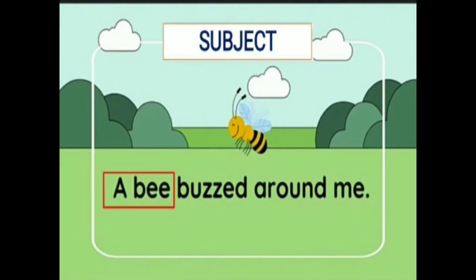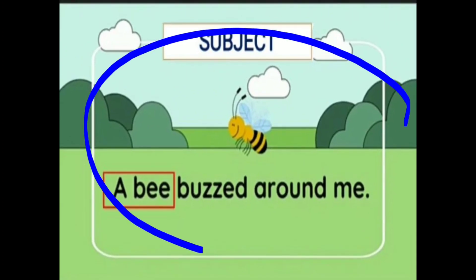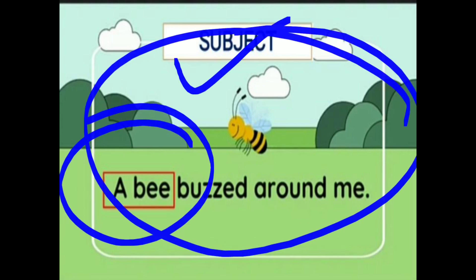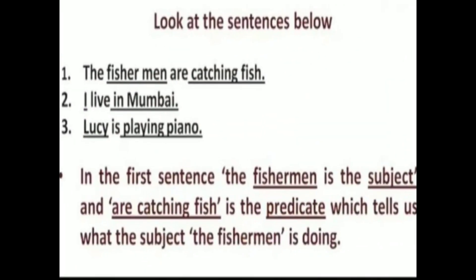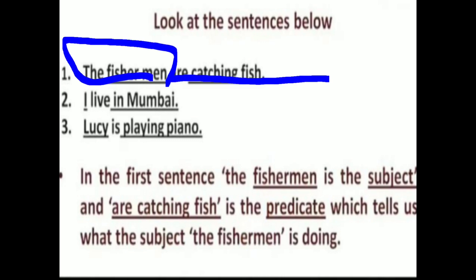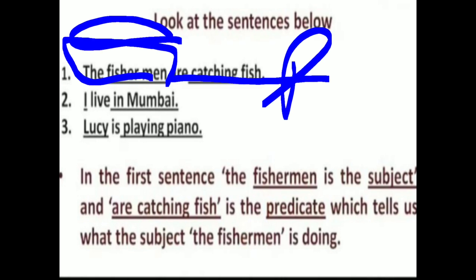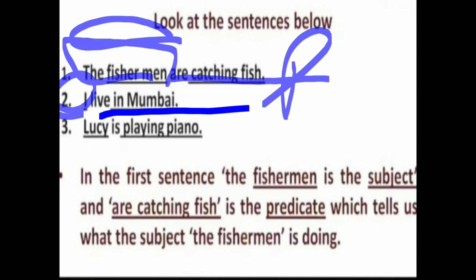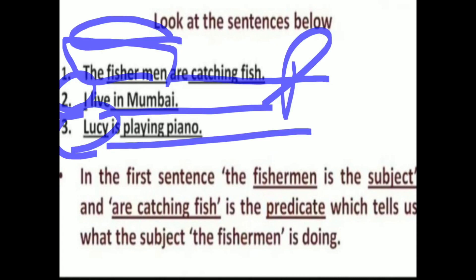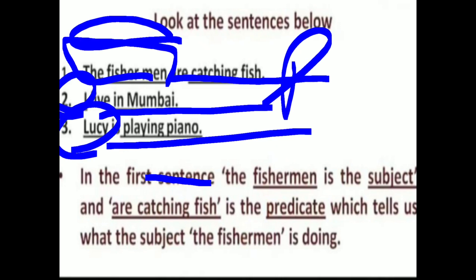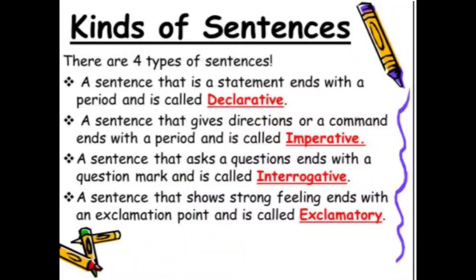Look at these examples. 'A bee buzzed around me' — bee is the subject, and 'buzzed around' is the predicate. 'The fishermen are catching fish' — the fishermen is the subject, 'are catching fish' is the predicate because it contains the verb. 'I live in Mumbai' — I is subject, 'live in Mumbai' is predicate. 'Lucy is playing piano' — Lucy is subject, 'is playing piano' is predicate.